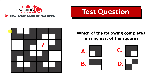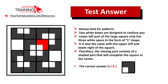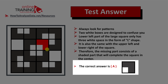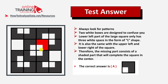Always look for patterns. The middle box, right in the center of the larger square, is symmetrical — the L-shape at the bottom and the shape in the upper right corner represent symmetry for this middle square. Two white boxes are designed to confuse you. The lower left part of the larger square only has three white spaces in the form of an L-shape, and a similar symmetrical pattern follows in the upper right corner. The missing part contains a shaded section that completes the center square, so the correct answer is choice A.